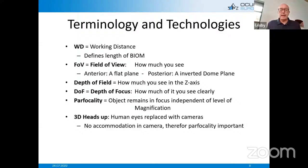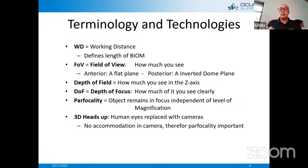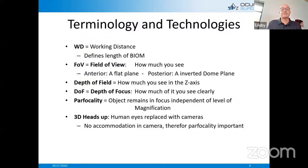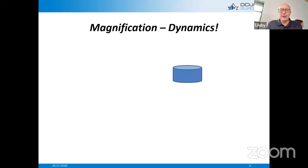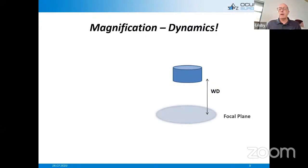Today we also use 3D head subsystems where the human eyes are replaced with a camera. It has benefits but also drawbacks — there is no accommodation in the camera, and therefore focusing the microscope and the biome is even more important. So, what does this mean — the magnification dynamics? Every microscope, depending on the objective lens, has a working distance which defines the focal plane or focal point of the microscope.